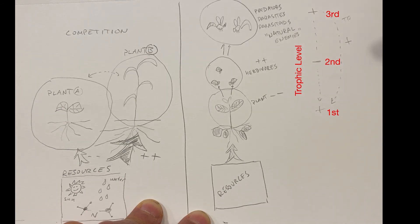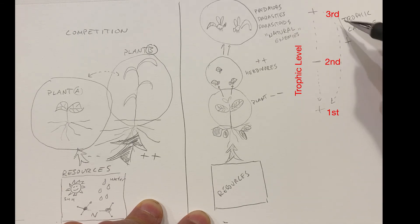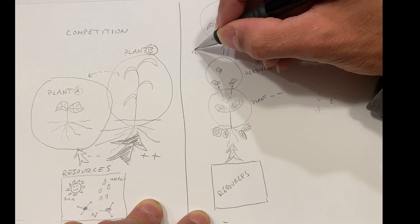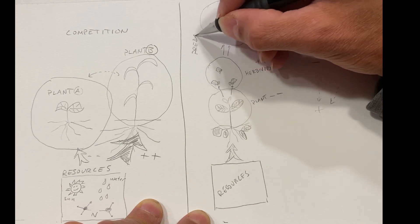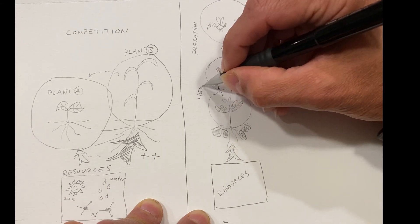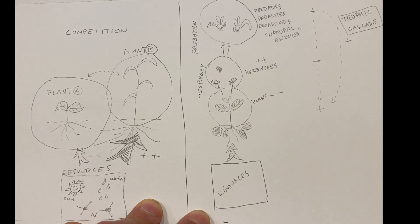We refer to this as a trophic cascade. And what this means is that there's an effect via feeding of one trophic level, the natural enemies, the predators, parasites in this case, on a non-adjacent trophic level, the plants. So again, this interaction here is called predation or parasitism, something like that. This one here is herbivory. And through the action of predators, we can get a positive effect on plants.